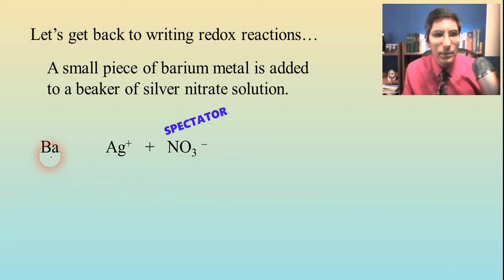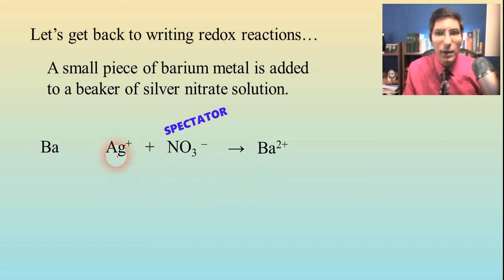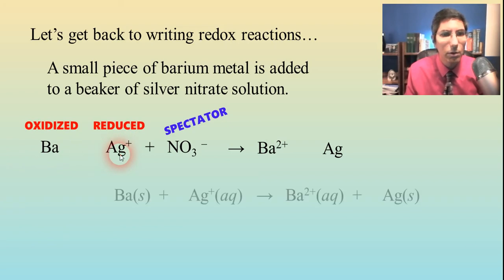Barium metals normally get oxidized into their positive ion form — that's a +2, which we can predict from the periodic table. So barium becomes +2, and then metal ions get reduced into their elemental form, so silver metal is going to be produced. Barium is being oxidized and silver is being reduced, and we write the overall balanced equation.